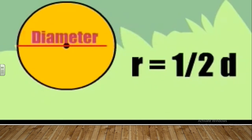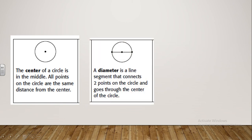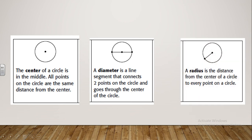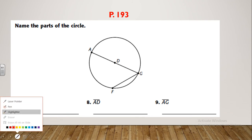Okay guys, we finished the video — I hope you liked it. So the point in the middle inside the circle is called the center. The line that crosses the center is called the diameter. And the line that starts from the center to any point on the circle is called the radius.